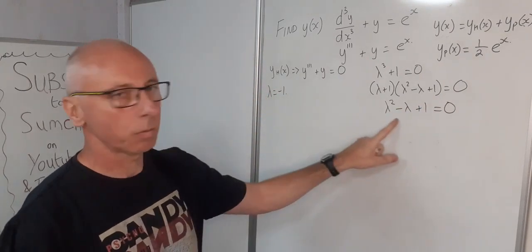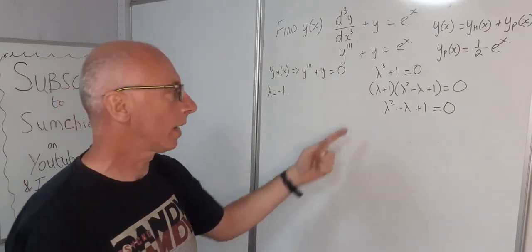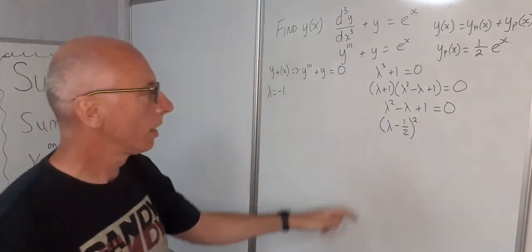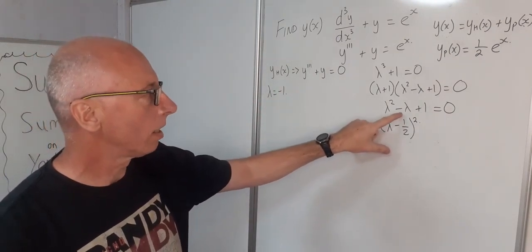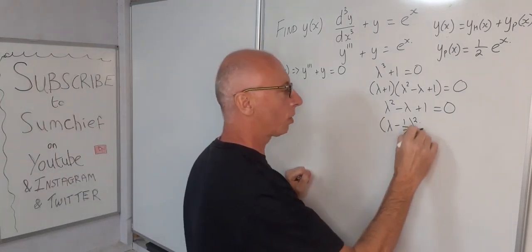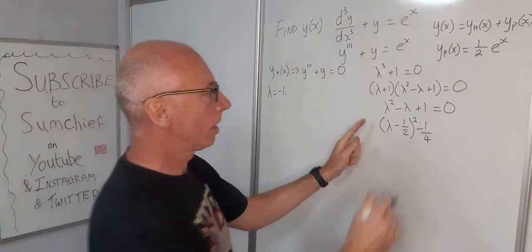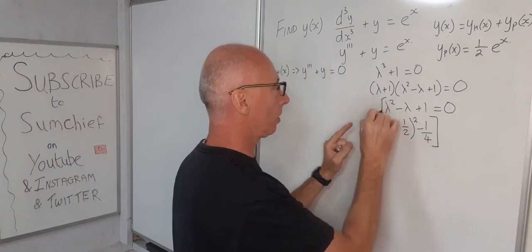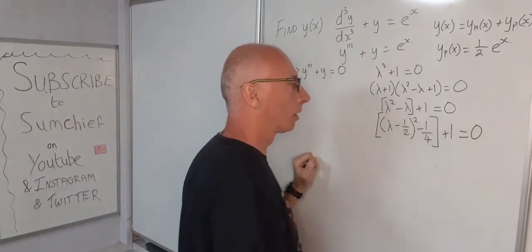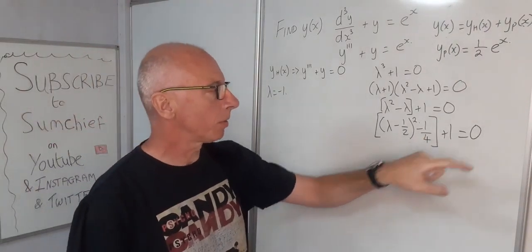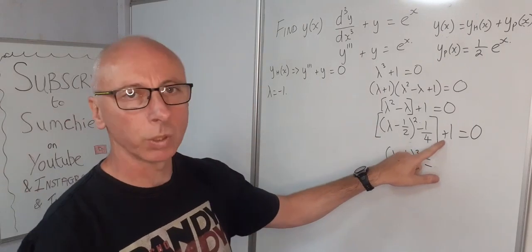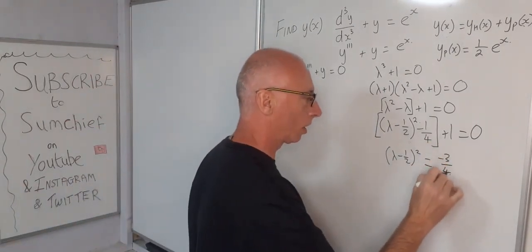Now we need to make (λ² − λ + 1) equal to zero. We can't factor it directly, but we can complete the square. So (λ − 1/2)² — multiplying that out gives λ² − λ plus a quarter, so we subtract a quarter and add one, giving (λ − 1/2)² + 3/4 = 0. Bringing it to the other side: (λ − 1/2)² = −3/4.